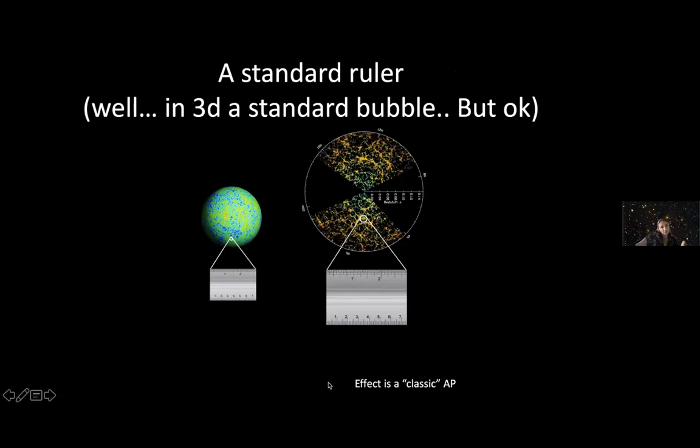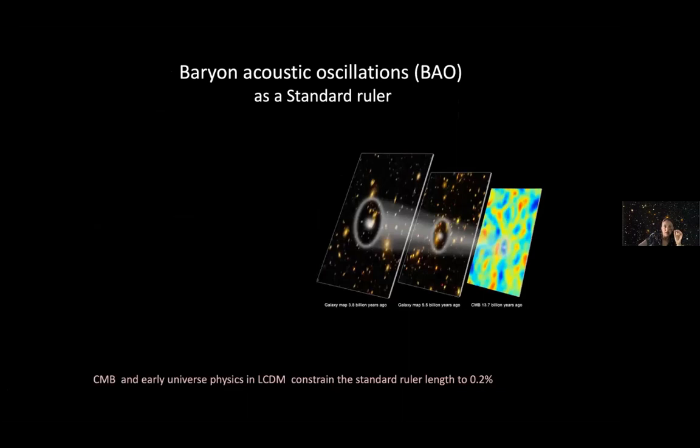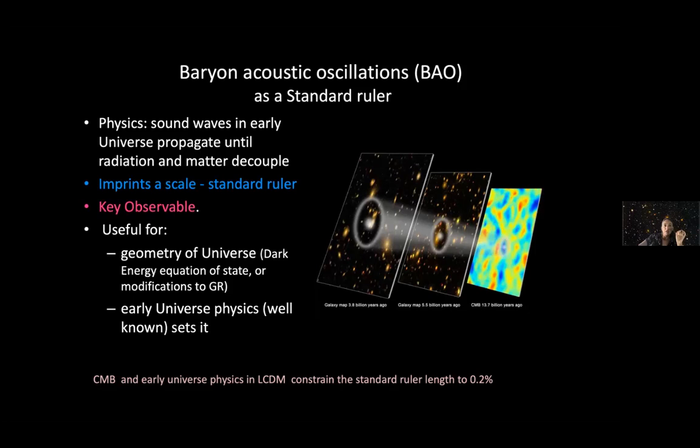This gives us a standard ruler in 3D. You should visualize it more as a standard bubble. The effect as one observes galaxies at late times, instead of measuring distances, measures redshift, is a classic Alcock-Paczynski effect. The key thing is there is a standard ruler and the physics in the early universe define it. It's a useful observable for measuring the geometry of the universe. Early universe physics, which is extremely well known, sets it.